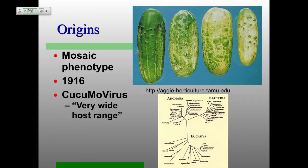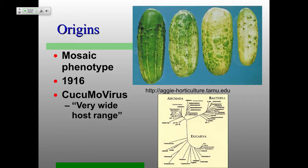CMV was found very early in the discovery of viruses — the first report was around 1916. Remember, the first viruses were described in the late 1890s, so this was really quite early on. A mosaic phenotype is a mosaic phenotype. Here's a happy cucumber, and here's an unhappy cucumber — that's what the mosaic phenotype really looks like. These cucumber mosaic viruses have a very wide host range.